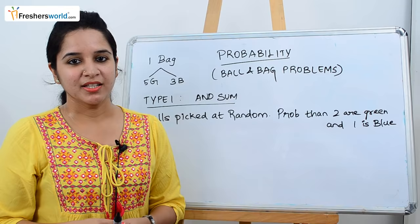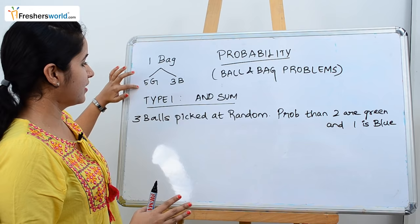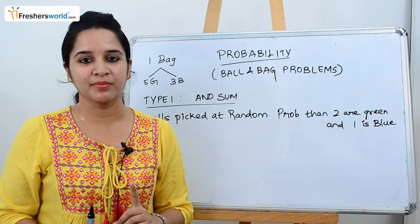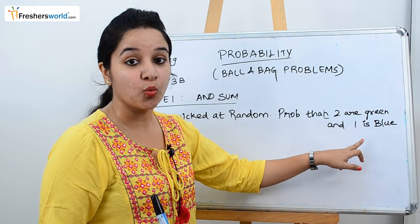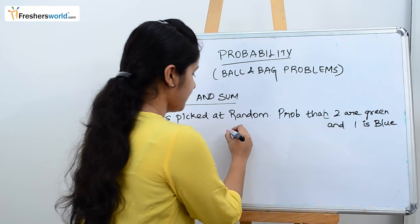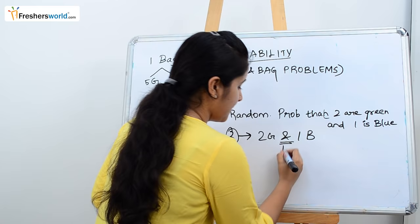We are going to use the same similar type of bag problem for all seven types. A bag has five green balls and three blue balls. Let's get started with Type 1. Type 1 is the AND sum. The question is: three balls are picked at random — what is the probability that two are green and one is blue? The total balls to choose is three. When you see AND, immediately multiply the answer.